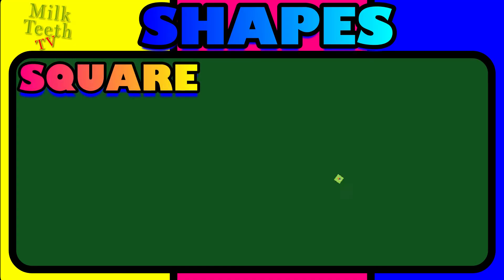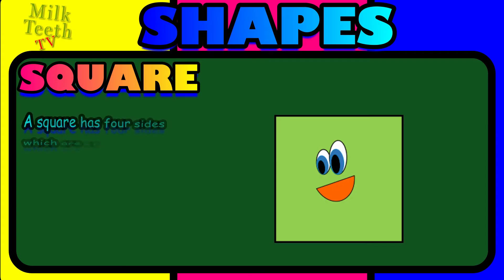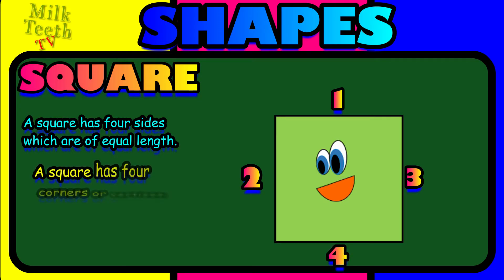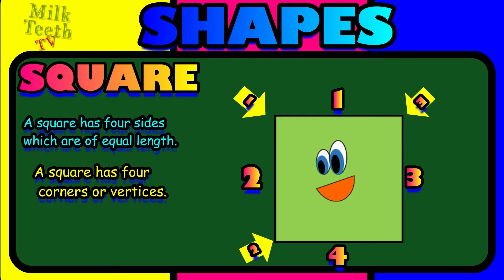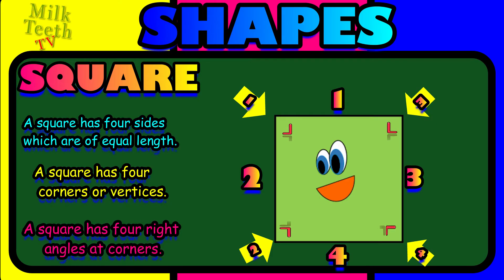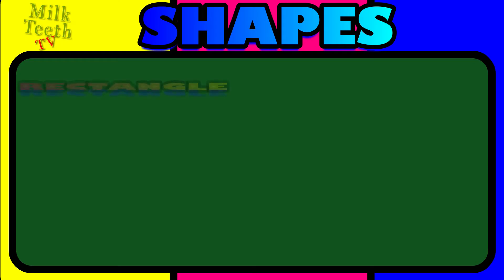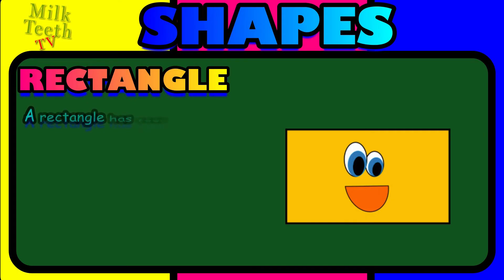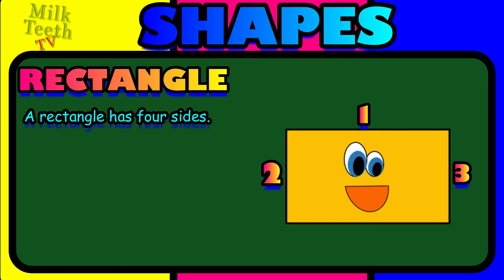Square. A square has four sides which are of equal length: one, two, three and four. A square has four corners or vertices: one, two, three and four. A square has four angles at the corners which are right angles: one, two, three and four.